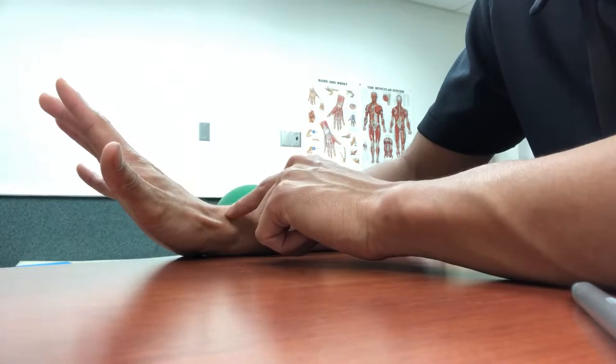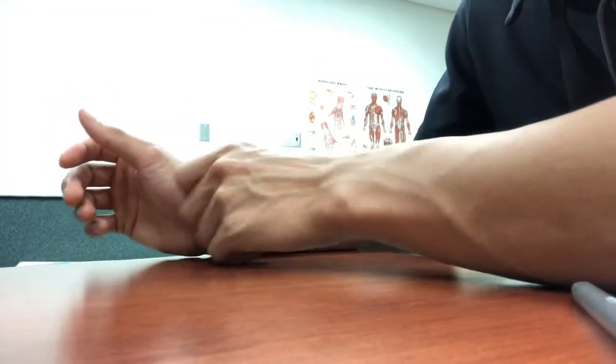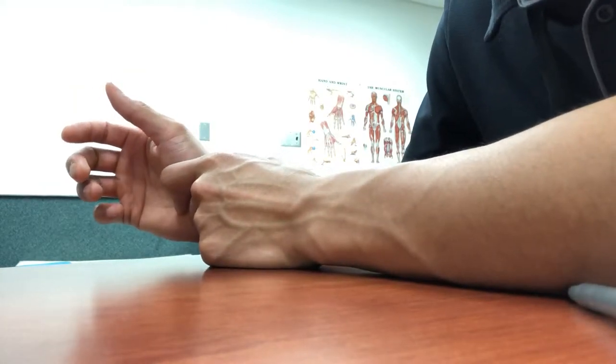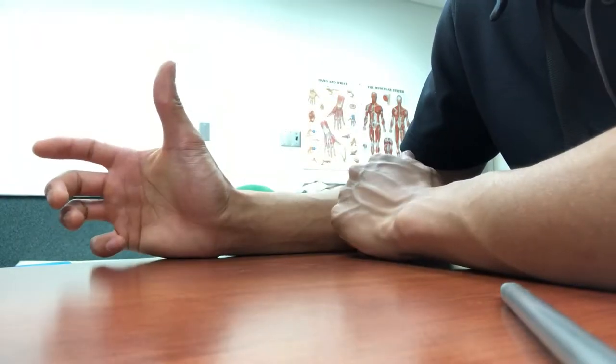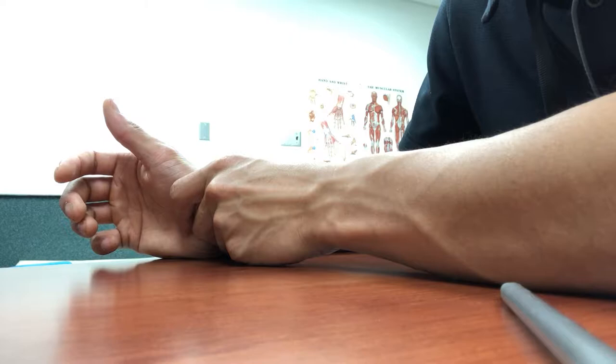We want to find that tendon called the anatomical snuff box. If it doesn't cause you a lot of pain to press onto that tendon, what you want to do is move your thumb up while you press into that tendon at the same time.